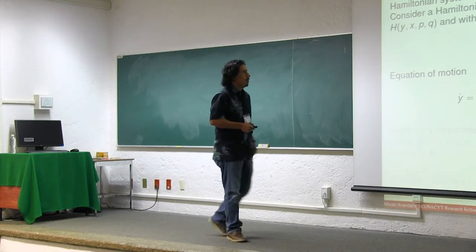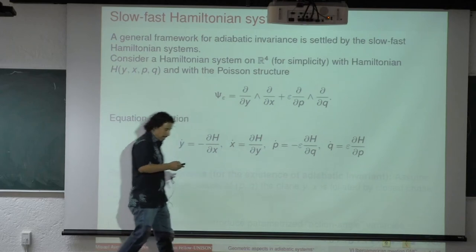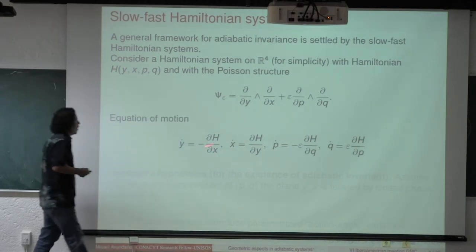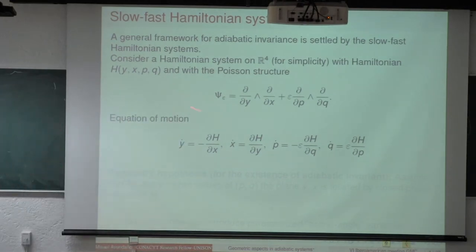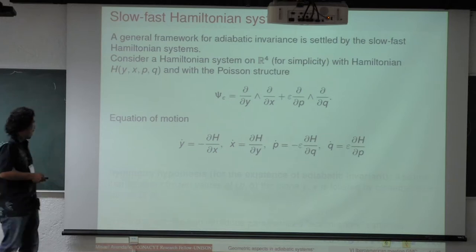We can consider this bivector as a perturbation of this part. The equations of motion for this Hamiltonian are these equations, and we can recognize that this pair of equations evolves faster than the other ones, because we have here the parameter epsilon which we are considering as a small parameter.